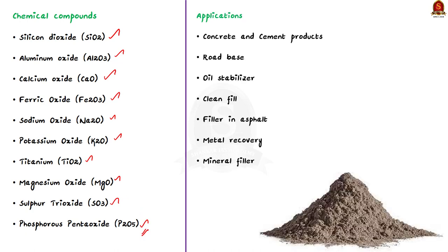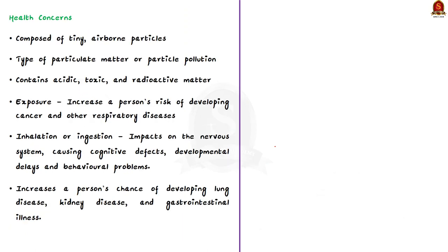Fly ash is used in concrete and cement products, as a road base, in soil stabilizer, as a clean fill, and as a filler in asphalt, metal recovery, and mineral filler applications. Importantly, fly ash is composed of tiny airborne particles and is thus considered a type of particulate matter or particle pollution.